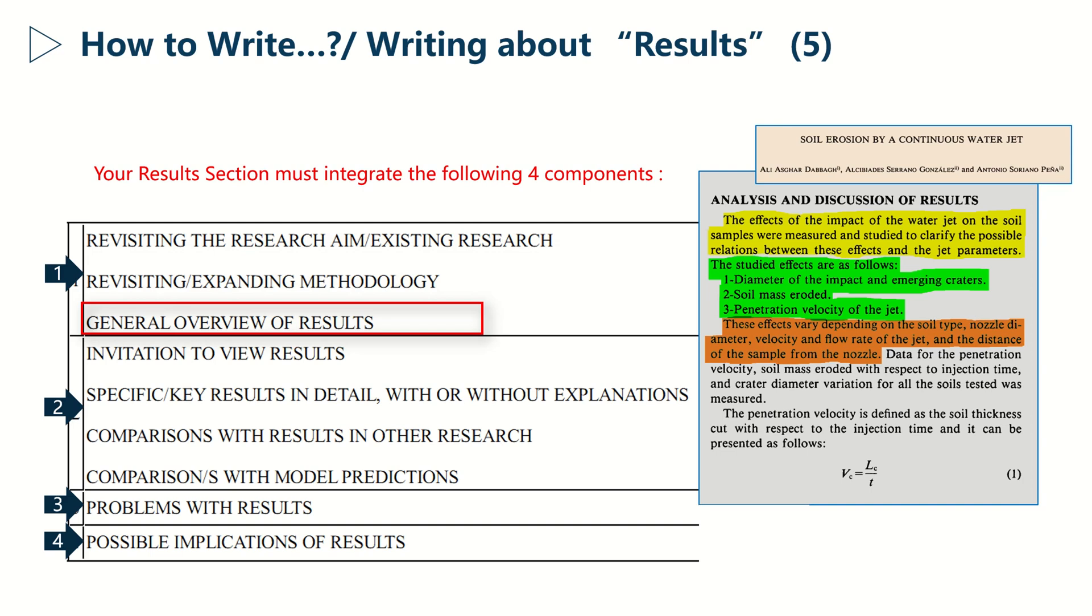The second component: the first step is to invite the readers to view results. This is what they did here in blue. The second step involves providing more details about your results. Then the third and fourth steps of the second component involve comparing your results and model with results in other research. The third component is about discussing possible problems with results, while the last component is about presenting possible implications.